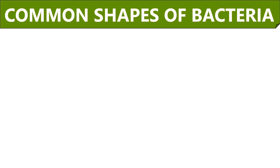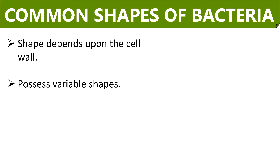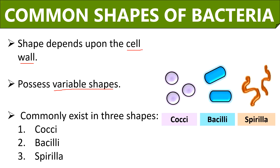Let us start the video by discussing the common shapes of bacteria. Bacteria are microscopic creatures which exist in variable shapes and sizes. The shape of bacteria is decided by the rigid cell wall, and the rigidity of the cell wall is due to the peptidoglycan. Bacteria generally exist in three shapes: cocci, bacilli, and spirula.